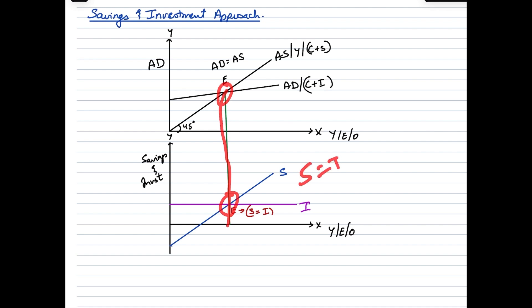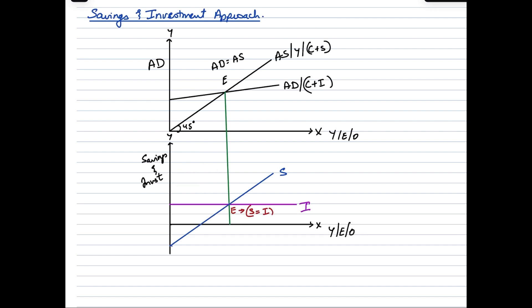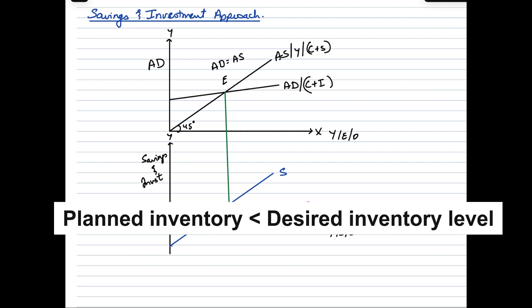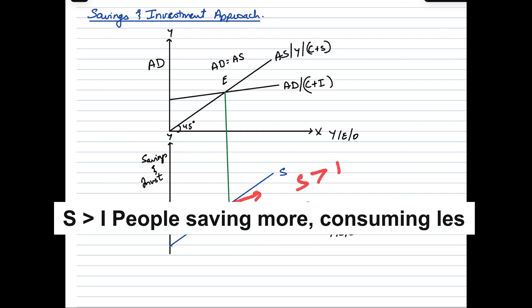To the left of equilibrium point E, investment is greater than savings, clearly indicating that people are consuming more than they are saving. The savings curve moves upward from the negative quadrant, becomes zero, and continues rising until it equals investment at the equilibrium point. When investment exceeds savings, people are consuming more, so planned inventory falls below the desired level, making it necessary for businesses to increase productivity and thereby raise income, output, and employment.